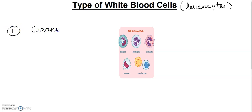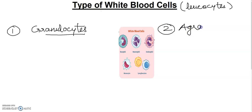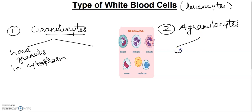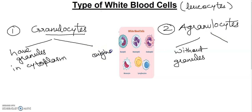The first group is granulocytes and the second is agranulocytes. Granulocytes have granules in the cytoplasm. Granulocytes originate in bone marrow, while agranulocytes originate in bone marrow as well as lymph nodes.